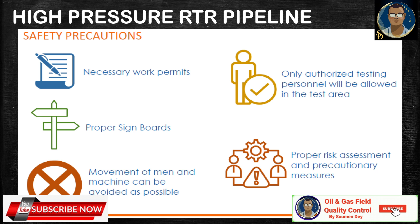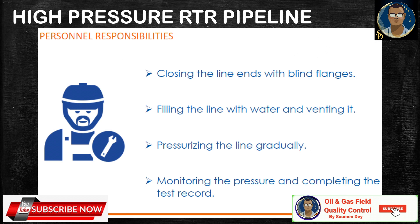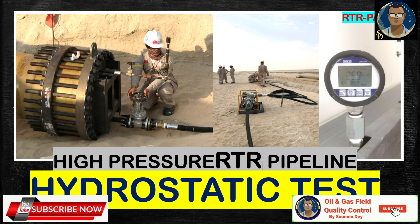Safety requirements include: obtaining the necessary work permit, posting proper signboards indicating 'Hydrotest in Progress', allowing only authorized testing personnel inside the test area, avoiding movement of machinery as much as possible, and conducting a proper risk assessment with precautionary measures. Job Safety Analysis (JSA) is one of the documents approved by all parties before any risk-related activities. Personal responsibilities include: closing line ends with blind flanges, filling the line with water and venting it, pressurizing the line gradually, and monitoring the pressure while completing the record.